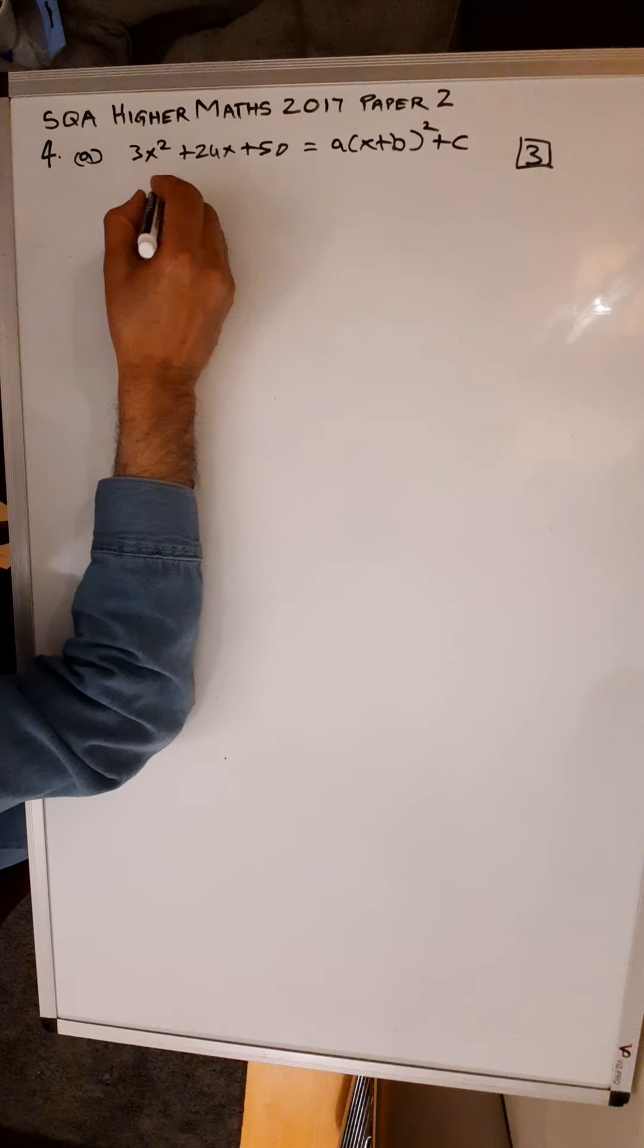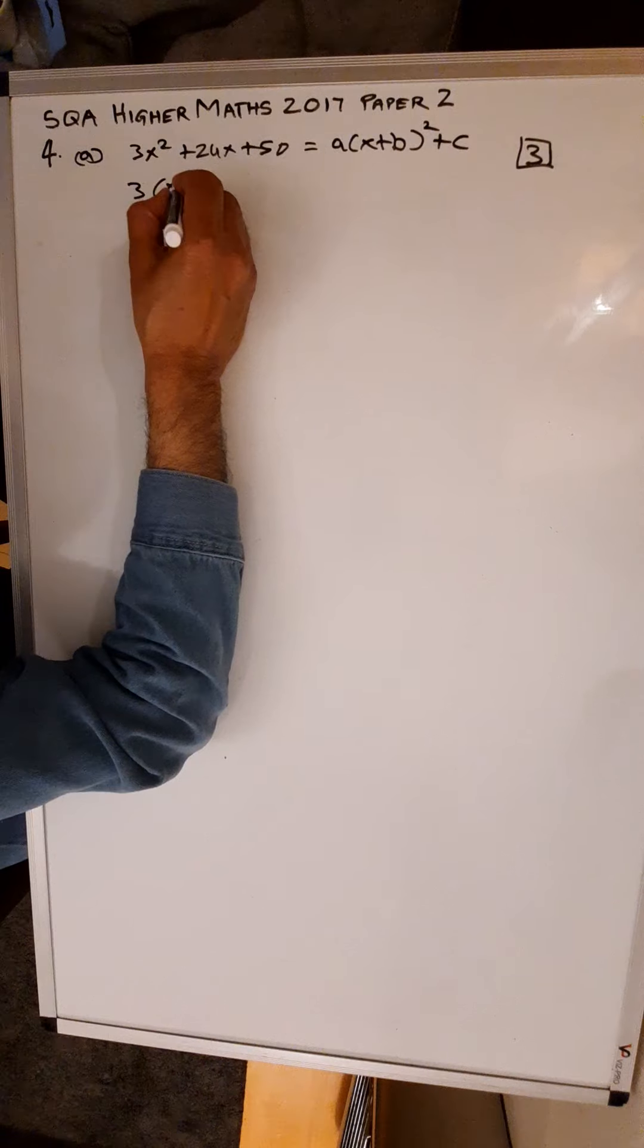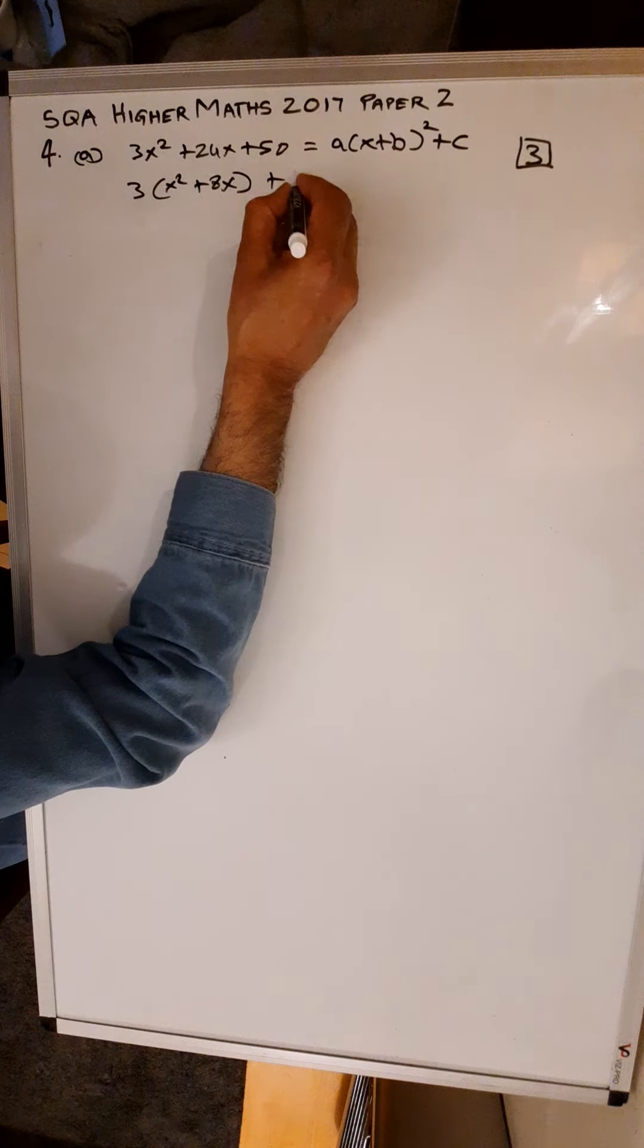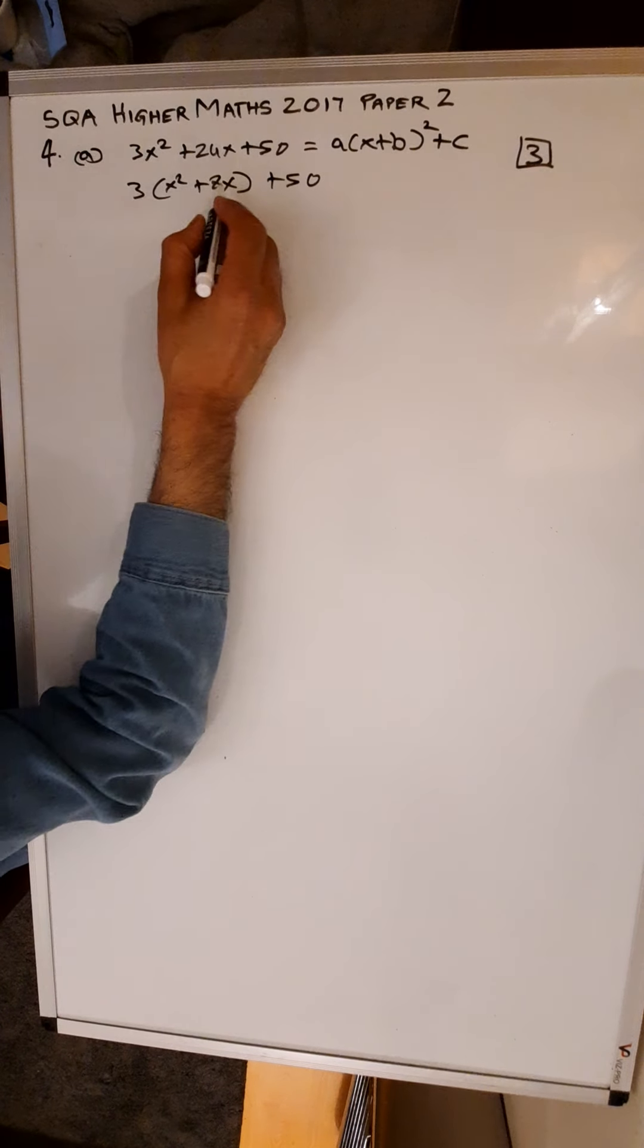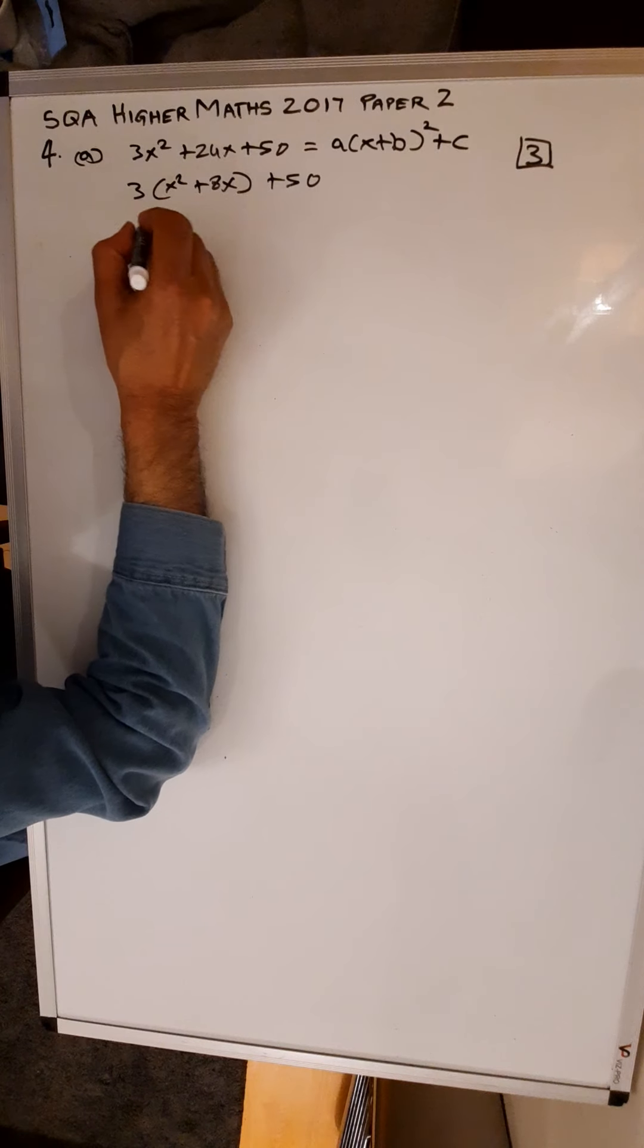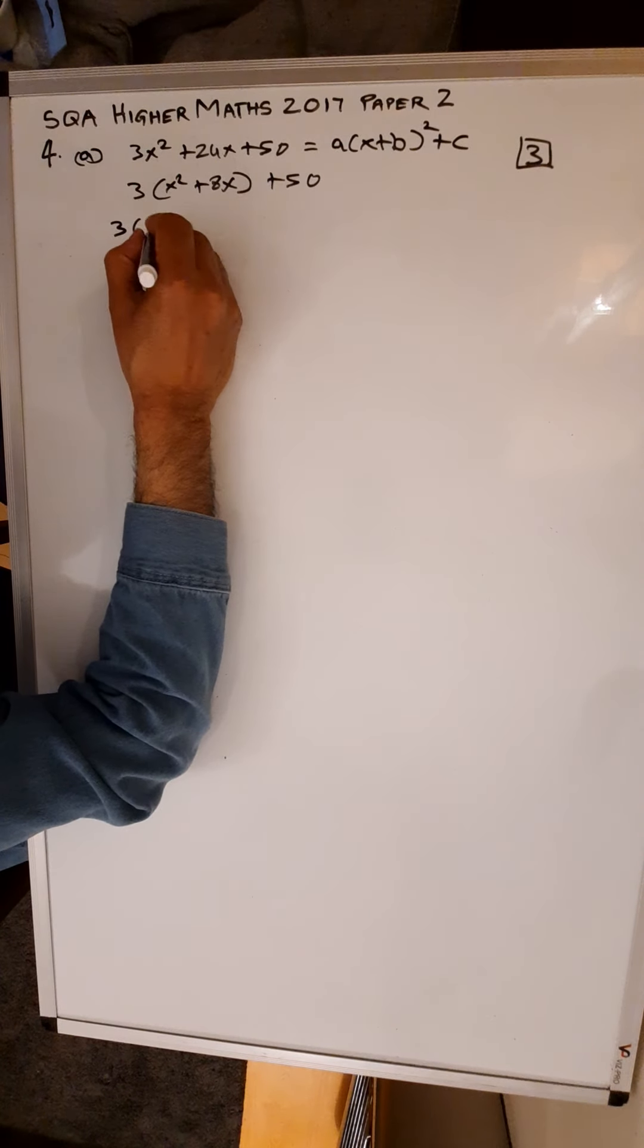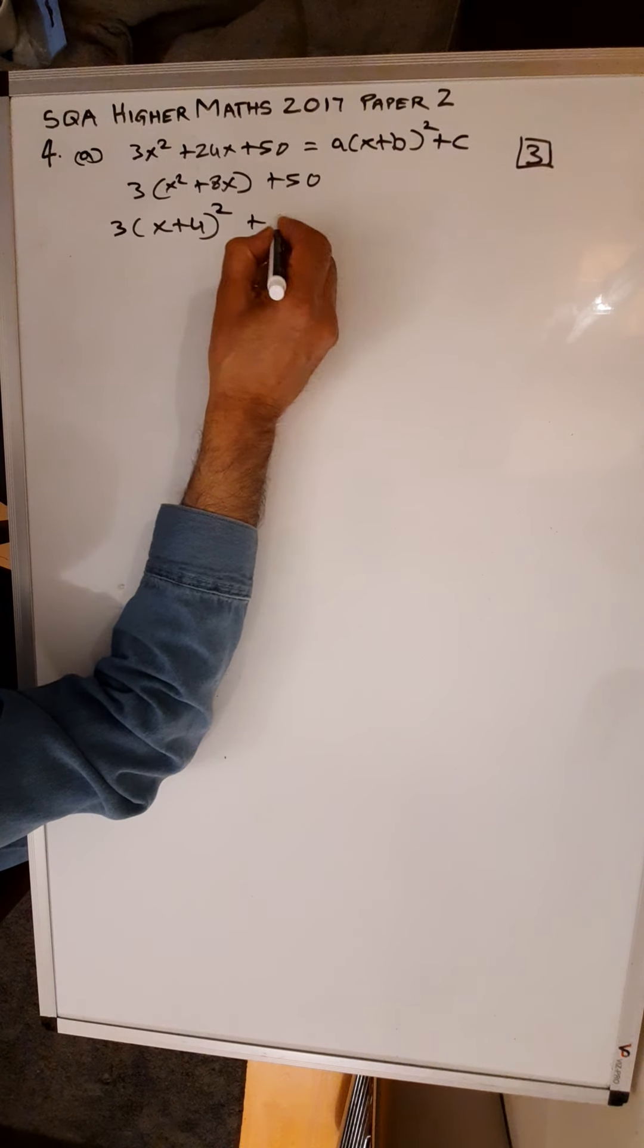So you need to take a 3 out as a common factor. Inside you got x squared plus 8x and you keep your 50 outside. You halve the coefficient of x. So 3 outside, (x plus 4) all squared plus 50.